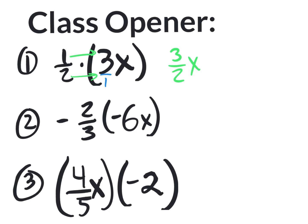Number two, we have a fraction times a term. Same thing — you could put it over one and multiply the top with the top. A negative times a negative equals a positive, so you know your answer is going to be positive. Two times six is twelve, and three times one is three, so we have twelve x over three. Twelve divided by three is four, so the final answer is four x.